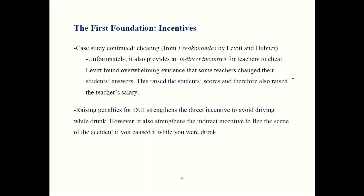This is not to say you can't punish drunk driving or strengthen DUI laws. Rather, if you're going to do that, you need to be careful to think about what indirect incentives are also being changed. If you want to clamp down on drunk driving, you'd better also clamp down on hit and runs. Hopefully after this section you've gained some incentive vision — the ability to see implicit incentives and design better policies because you're now aware of these indirect, implicit incentives.